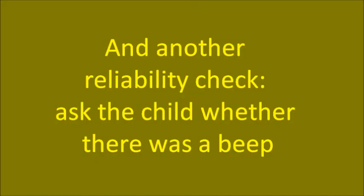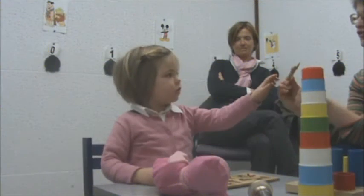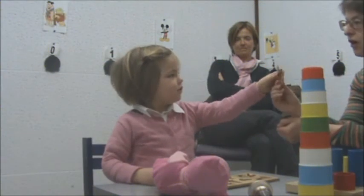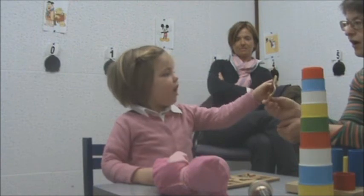To check whether Emily is able to give reliable answers, the testers introduce a negative check here. Some children are very reliable when asked whether they heard a beep. It's quite obvious that Emily's verbal answers are not reliable, and that it's a better idea to rely on her gaze and head turn.